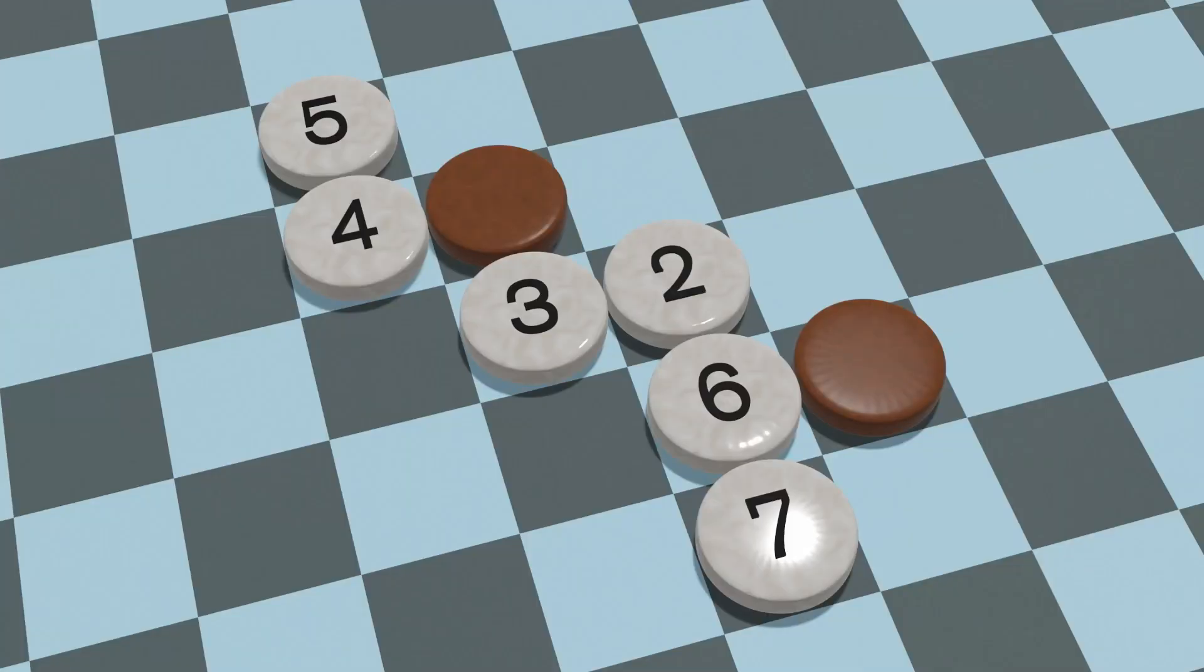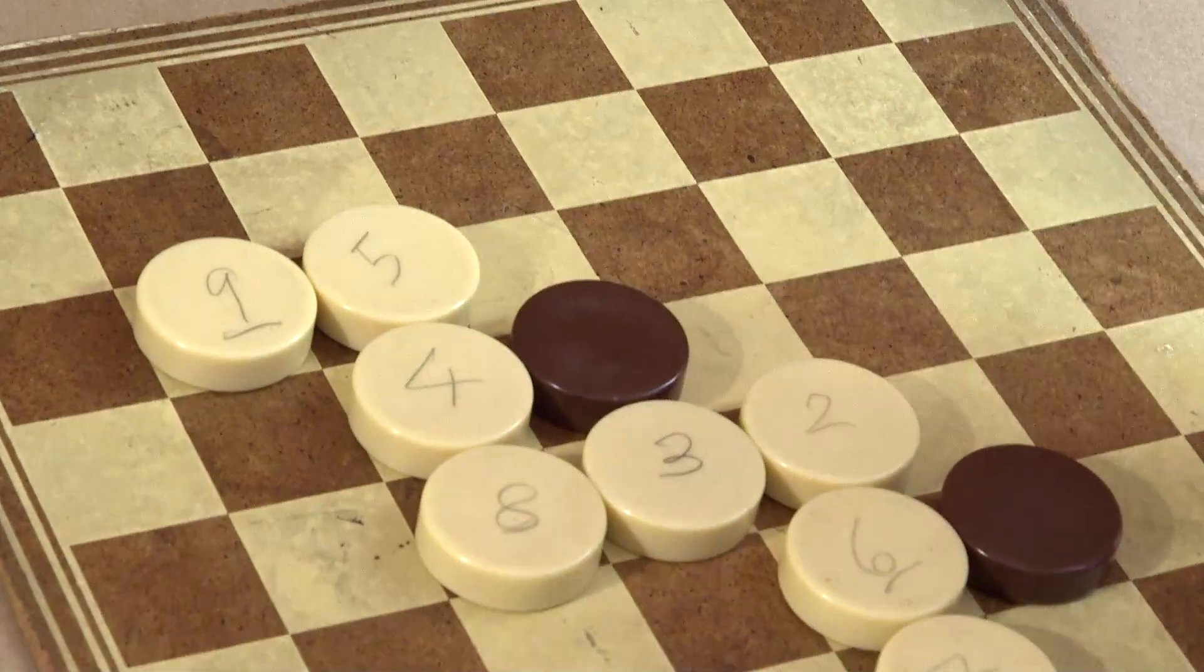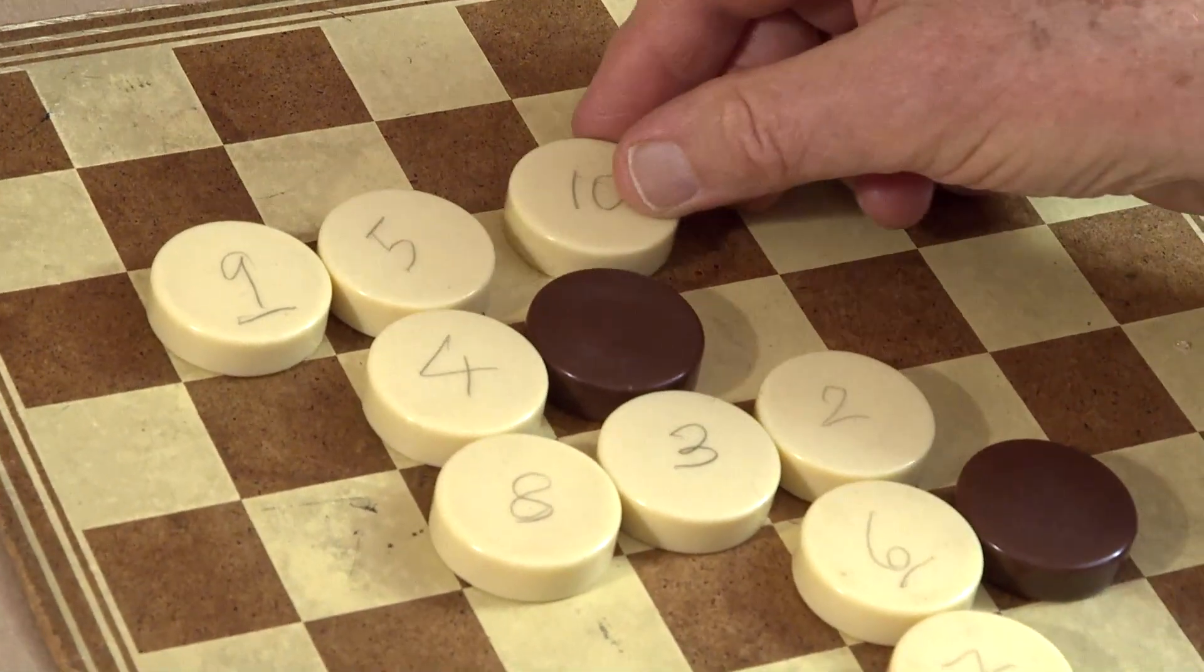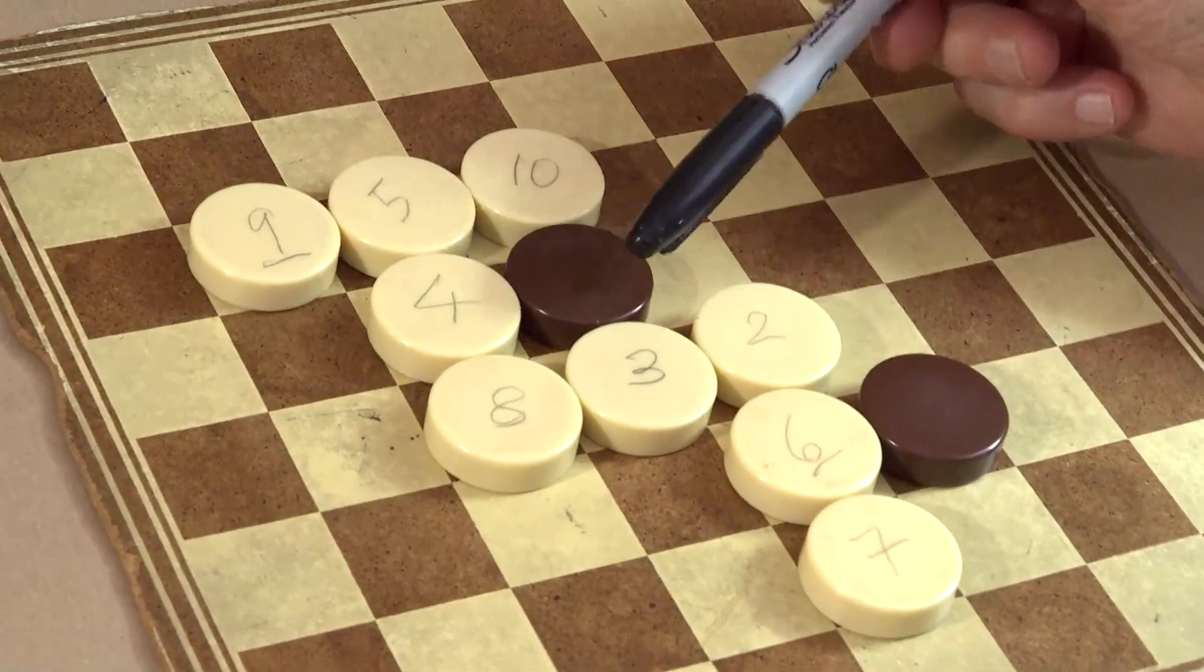Now what about the 8? How about here? Because then we've got the 1, a 4 and a 3 adding up to 8. Now what about the 9? Well, here would be a good place for the 9. But that looks promising because I can see where to put the 10. The 10 can go here because we've got a 4 and a 5 and a 1. Okay.